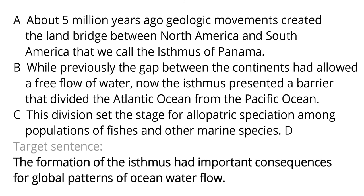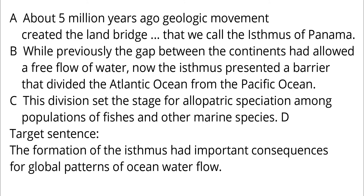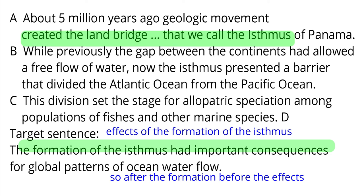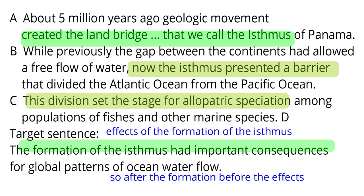Target sentence: The formation of the Isthmus had important consequences for global patterns of ocean water flow. The target sentence makes a general statement about the effect of the formation of the Isthmus on global patterns of ocean water flow. A talks about the formation of the Isthmus of Panama. B talks about the effect of the Isthmus on ocean currents. C talks about the effect of ocean currents on speciation. Since A talks about the formation and B and C talk about the consequences, the target sentence should be placed after A. Answer B.